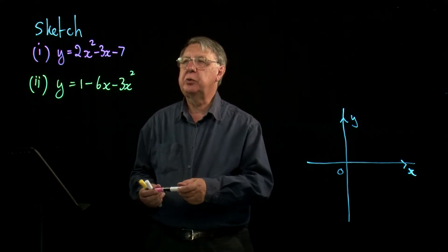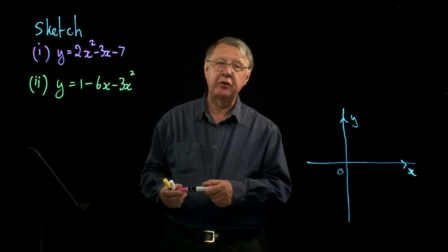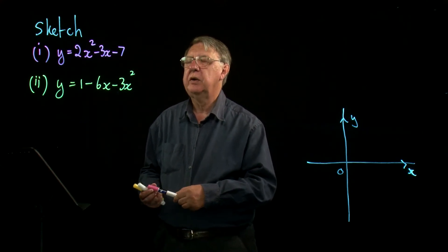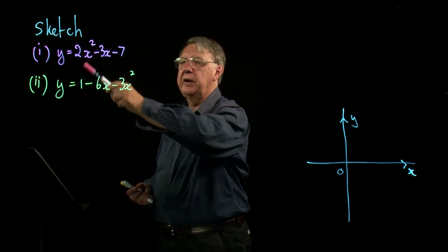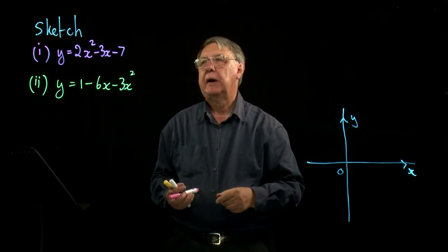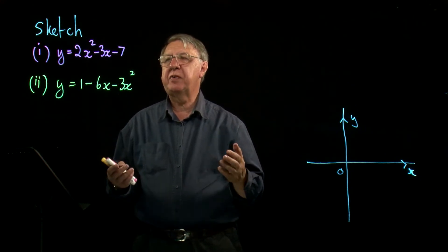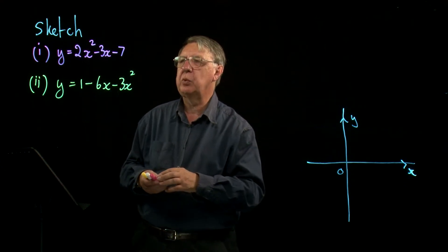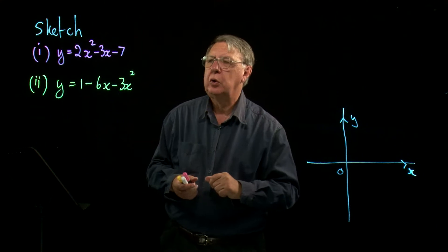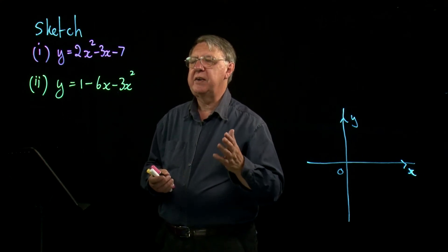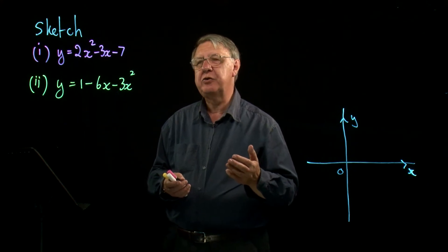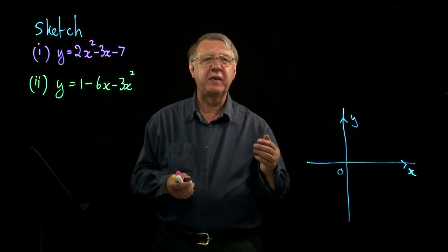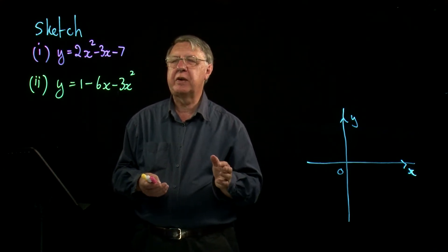We're now in a position to look again at curve sketching for the quadratic function, because we've got the complete method for completing the square when the coefficient of x squared is no longer 1. The method is very similar to what we've done already with a coefficient of 1, but the numbers just get a little bit more awkward, and some people panic when they get unusual answers.